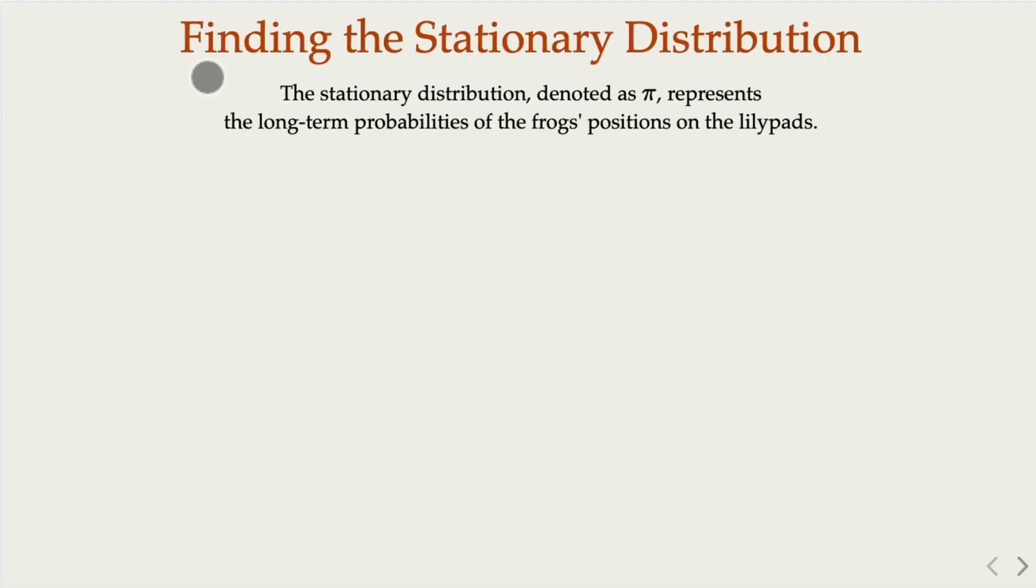We'll try to find the stationary distribution. So usually when we describe this, we're going to say pi, that is the long-term probability of the frog's position on the lily pad. So in this case, it's going to be a vector of n squared. Mathematically, we try to find pi.